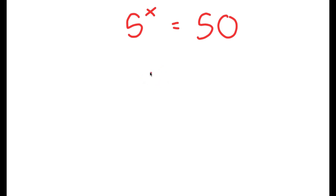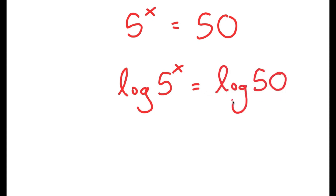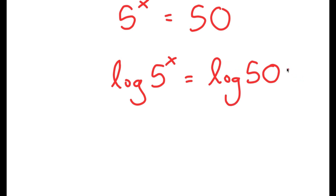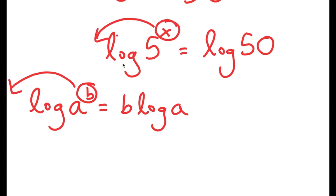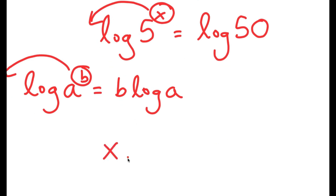To start, we're going to be using logarithms. I'm going to take the log on both sides, so I get log 5 to the power of x is equal to log 50. The reason I'm doing this is because logarithms come with a special property that states that if I have something in the form log a to the power of b, I can move the exponent b to the front, so this turns into b times log a. So in this case, I have log 5 to the power of x, and I can move x to the front. So now I get x times log 5 is equal to log 50.